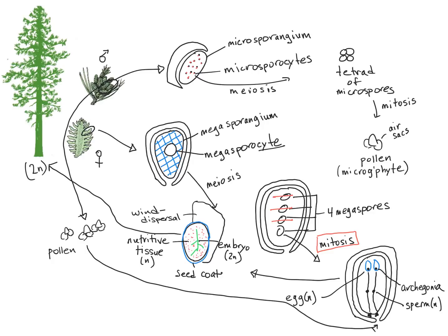Although the gymnosperm life cycle on the surface looks rather complicated, it's important to note that it still follows the same basic alternation of generations life cycle that we've learned about. Sporophytes give rise to spores. Spores grow into gametophytes. Gametophytes make gametes, which fuse to make a zygote that grows into the next sporophyte generation. That same pattern is repeated in this life cycle.